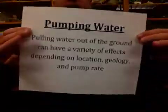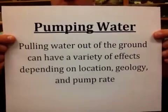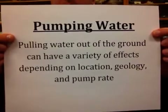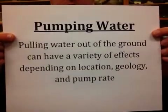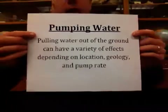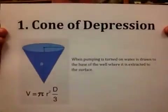Pumping water, referring to using a well in groundwater, is pulling water out of the ground and it can have a variety of effects depending on the location, the geology, and the pump rate. We're going to look at a couple of consequences of pumping groundwater and talk about equations you might use to calculate these effects. The first is looking at a cone of depression.